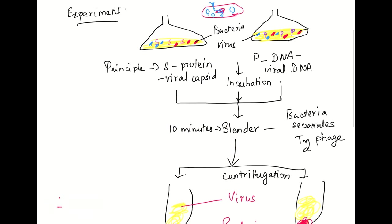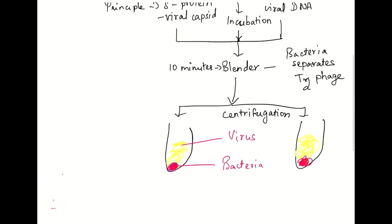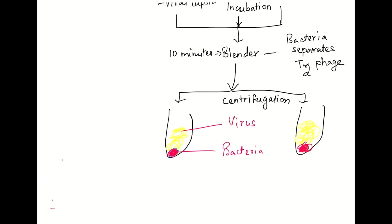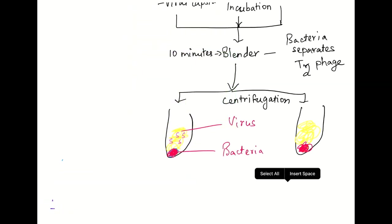The flask in which there was the radioisotope sulfur will now have the viral protein coats in the supernatant and so the radioisotope will be in the supernatant.